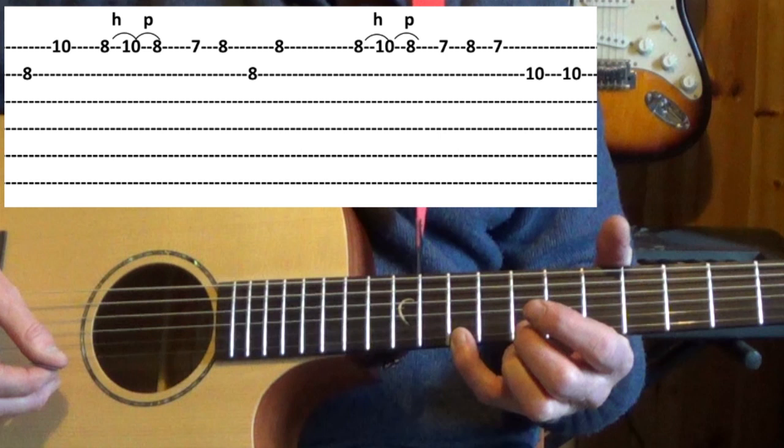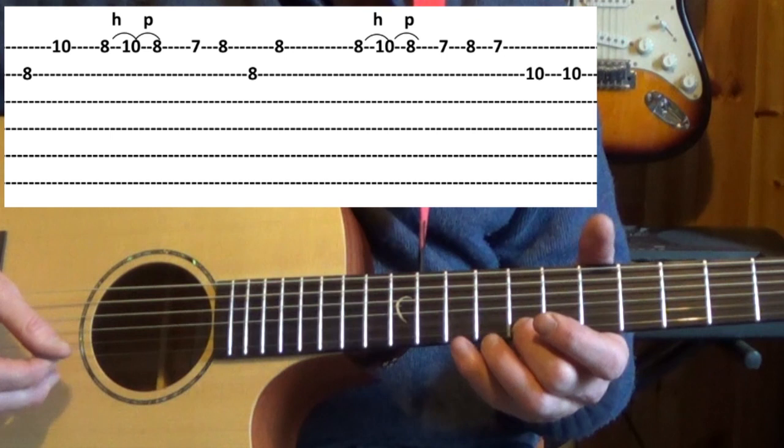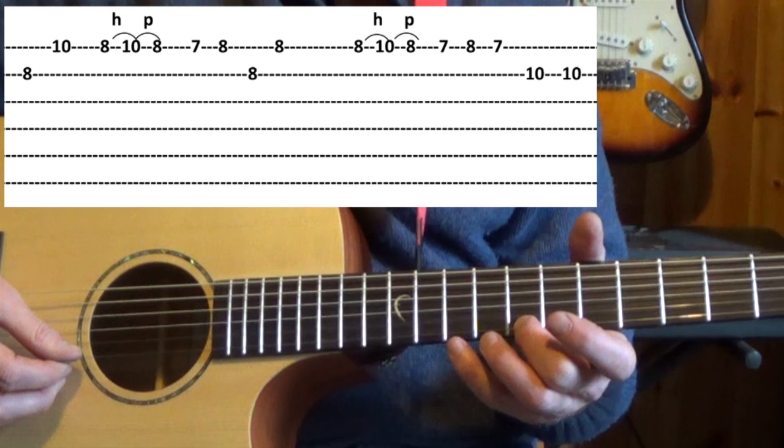Next we've got a hammer-on pull-off, a very light quick hammer-on pull-off from the eighth fret of the first to the tenth fret. So you pick the note on the eighth fret and you hammer your pinky on to the tenth and pull it off.